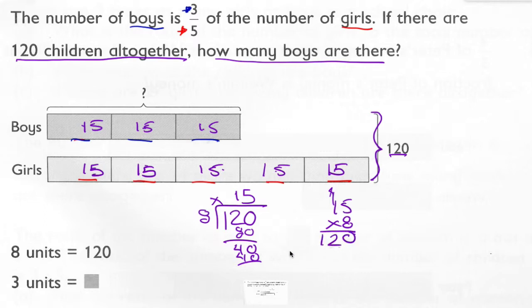Okay. So now we can answer the question, how many boys are there? Well, there's 15, 15, and 15. 15 times three is 45. So three of the sections equals 45.